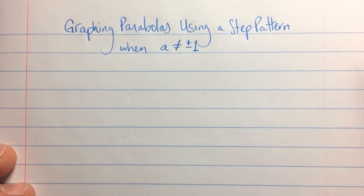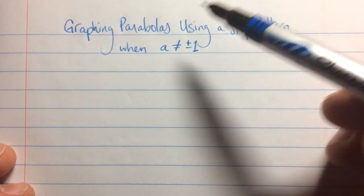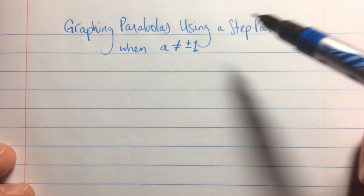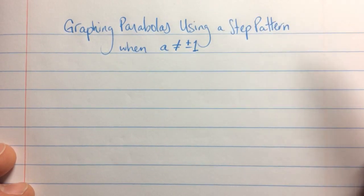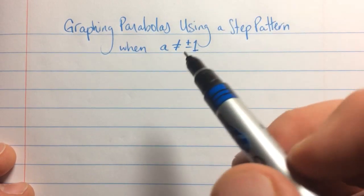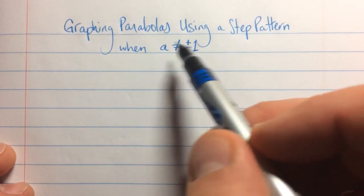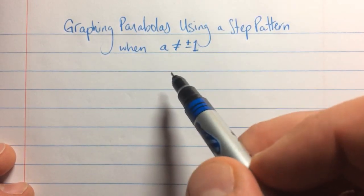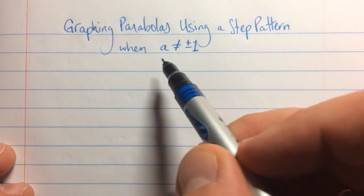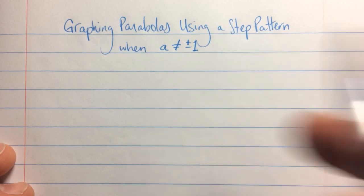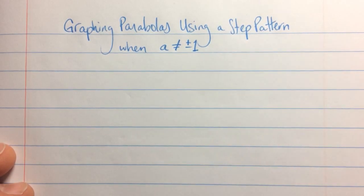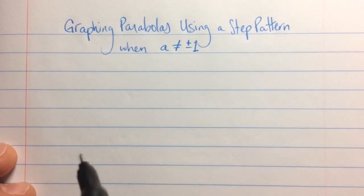Hi, I'm Brandon Graceley. I'm a high school math teacher. We've already looked at how to graph parabolas using a step pattern when the coefficient on our x-squared term was 1 or negative 1, but let's look at what happens when that value is not 1.